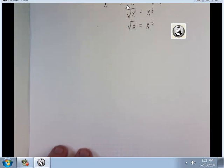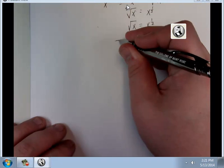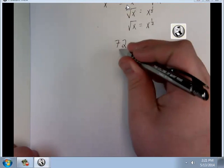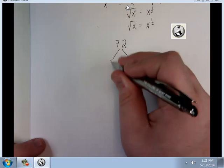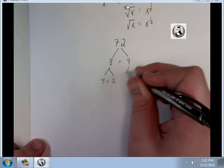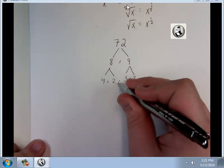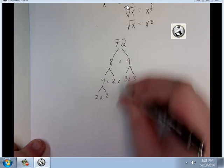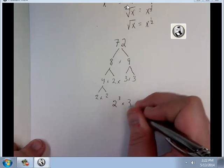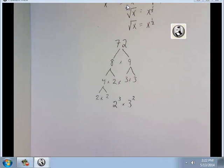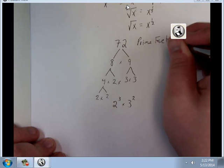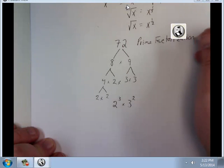Before we get into that, I'm going to take you back a little bit further into elementary school. I'm going to give you the number 72. And I'm going to ask to make a factoring tree. Where you'd say, well, what times what gives me 72? Well, 8 times 9 would give me 72. Well, 8 I can break down into 4 and 2. And 9 can go down to 3 times 3. 4 can break down again into 2 times 2. So my whole factorization of 72 will be 2 to the 1, 2, 3 power times 3 to the second. This is called prime factorization.